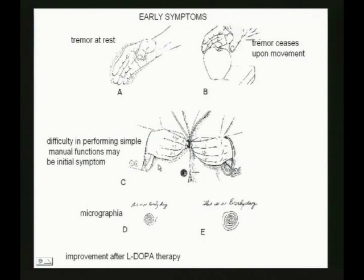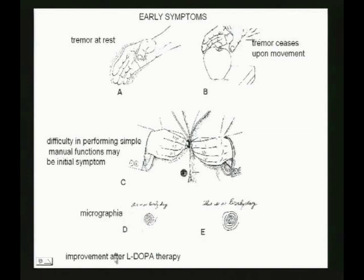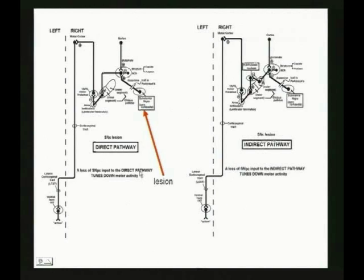Early symptoms of Parkinson's: tremor at rest — don't confuse with cerebellar tremor, which occurs during movement. There's trouble starting simple tasks like buttoning a coat. Micrographia is classic — writing gets smaller and smaller. Idiopathic Parkinson's usually responds to L-dopa therapy. In Parkinson's disease, you lose the substantia nigra. The nigra excites the direct pathway, which gives you movement. If you lose the nigra, the indirect pathway — the slowing-down pathway — takes over, and you get bradykinesia.